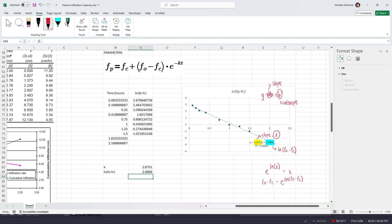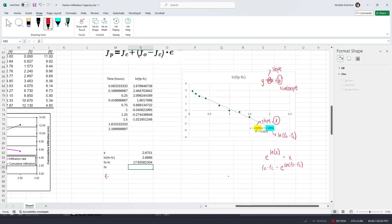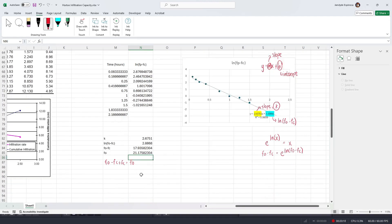Now, since we know that e raised to ln of a number will just be the number itself, if we have e raised to ln of fo minus fc, we're gonna get fo minus fc. And so again, we have k as 2.6571, which is the slope of the line, and the intercept 2.8868 is the value of ln of fo minus fc. And so e raised to ln of fo minus fc, that's gonna give us fo minus fc. Now, to type e or Euler's constant in Excel, use the exp function. By default, we have exp, open parenthesis, and then the number to which we are raising e, and then close parenthesis. And so we already have f sub o minus fc. To get fo, we're just gonna add fc to the expression f sub o minus fc, so that we can cancel fc. Now, as defined earlier, fc is the final steady state infiltration rate, which was 3.24.